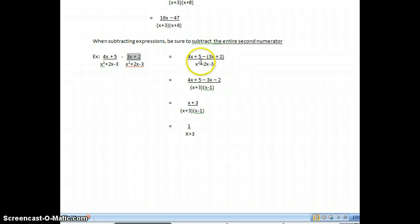So I get 4x plus 5 minus 3x plus 2. Now when I drop my parentheses, don't forget to change the sign of everything on the inside. Now what I will do is combine those like terms. 4x minus 3x gives me x, 5 minus 2 gives me 3. And what I'm able to do is cancel out the x plus 3 and x plus 3 in this case, and I get 1 over x plus 3.